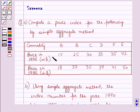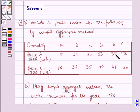The data is given in which the commodities are A, B, C, D, E, and F. The corresponding prices in the year 1976 in dollars are given as 15, 25, 30, 33, 35, and 42. And the prices in the year 1986 in dollars are given as 18, 37, 35, 39, 41, and 50.